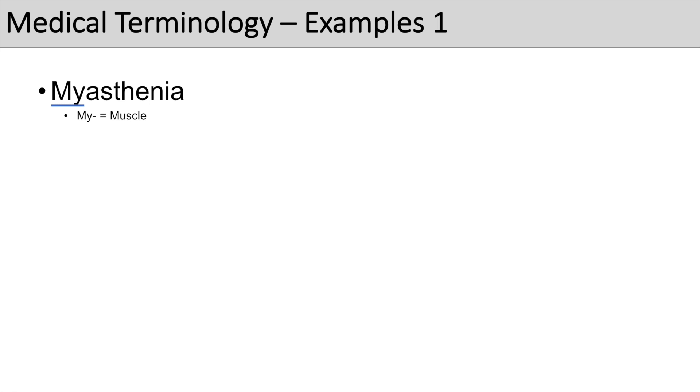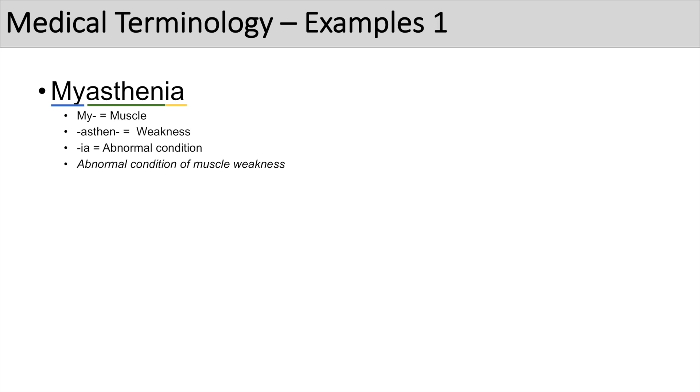Now that we've gone over those medical terms, let's put them into practice. The first word is myasthenia. Breaking it down: 'my' means muscle — think of myoclonus. 'Asthen' means weakness, which we learned in this lesson. And 'ia', learned in a previous lesson, means an abnormal condition. Put together, myasthenia means an abnormal condition of muscle weakness. You may have heard of myasthenia gravis, which also relates to muscle weakness.